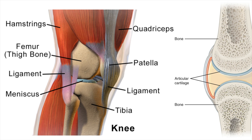The knee is formed by the connection of several bones, muscles, tendons and ligaments. The tibia is the bone below the knee, the femur is the bone above the knee. The patella, which is also known as the kneecap, sits in front.